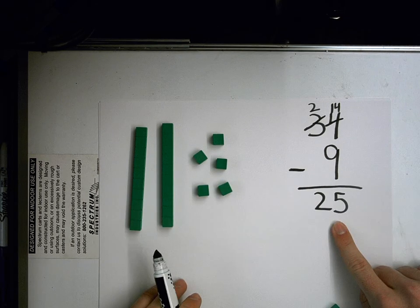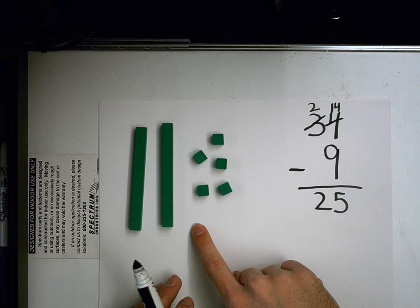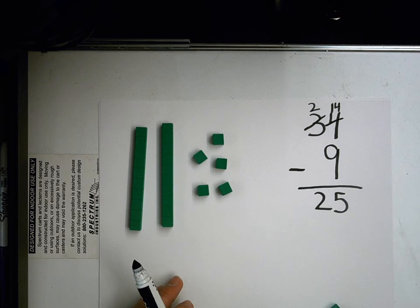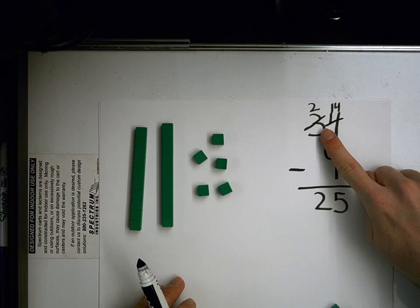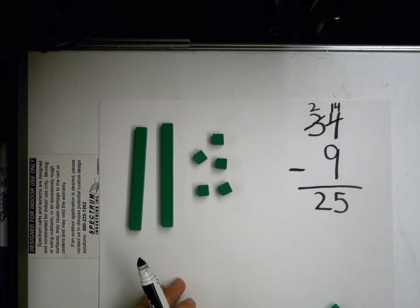So our number that we got when we subtracted is the same amount of blocks that we got when we took away the blocks. But we had to regroup. We had to change one of these tens into 10 more ones before we could do so.